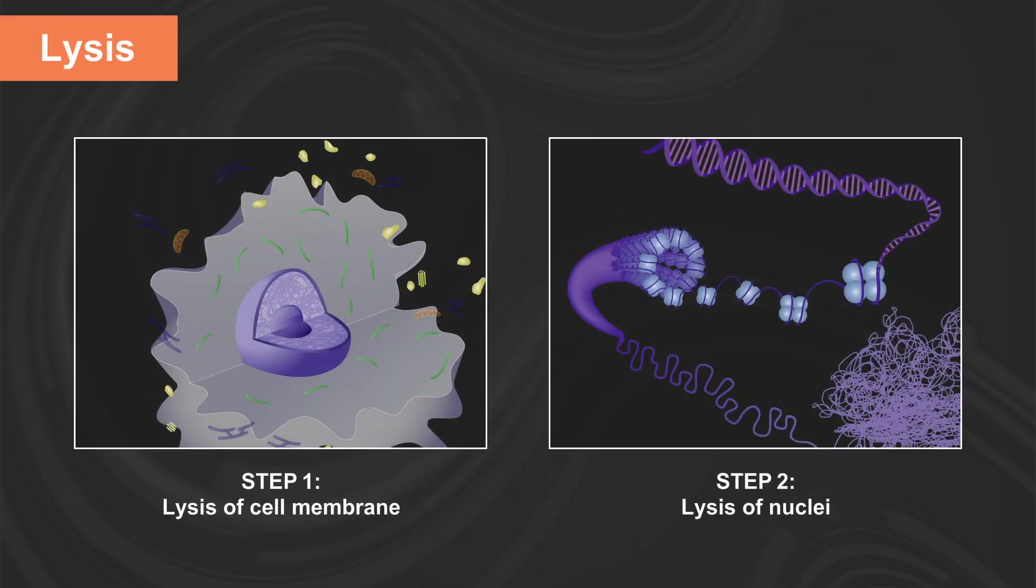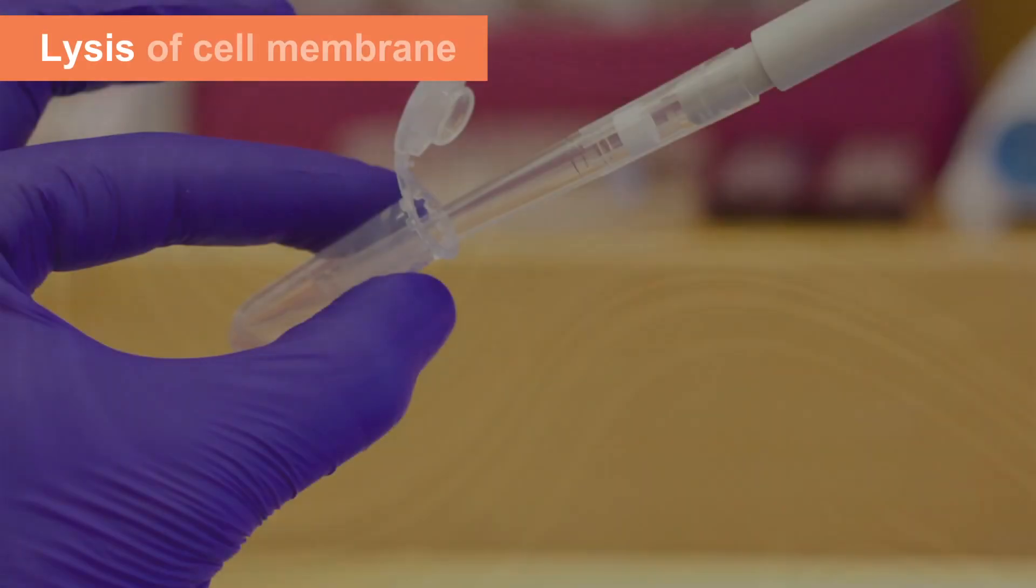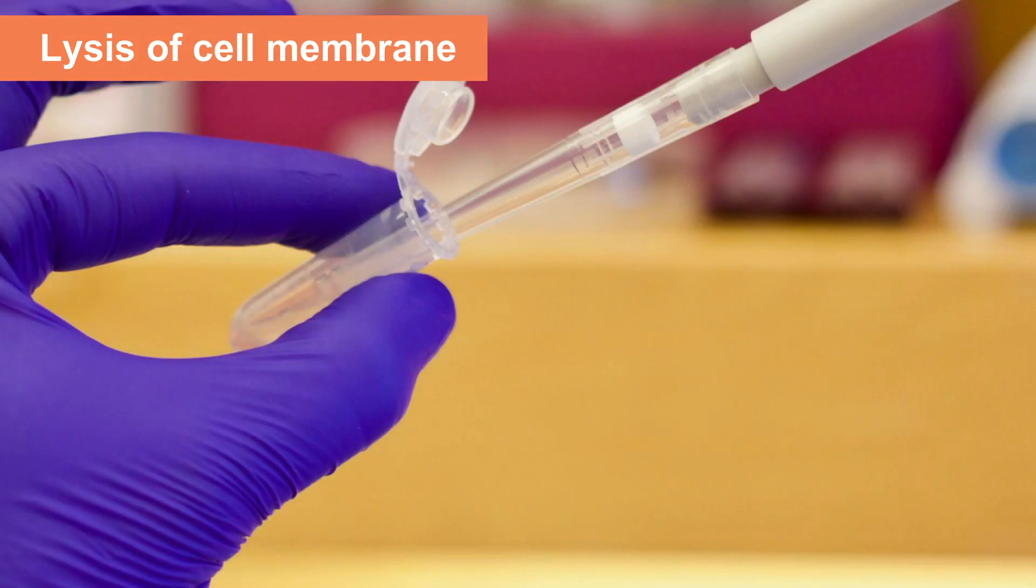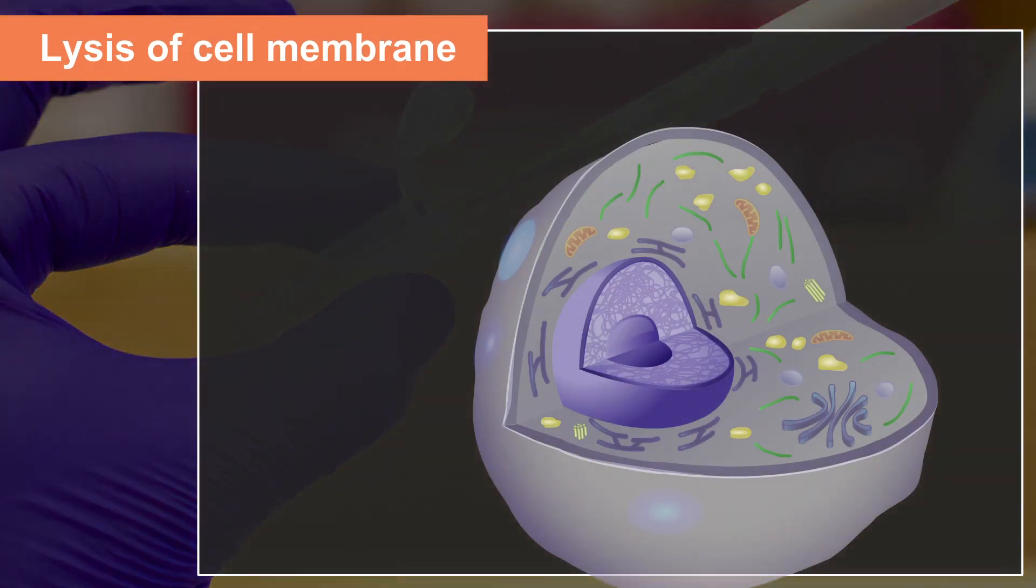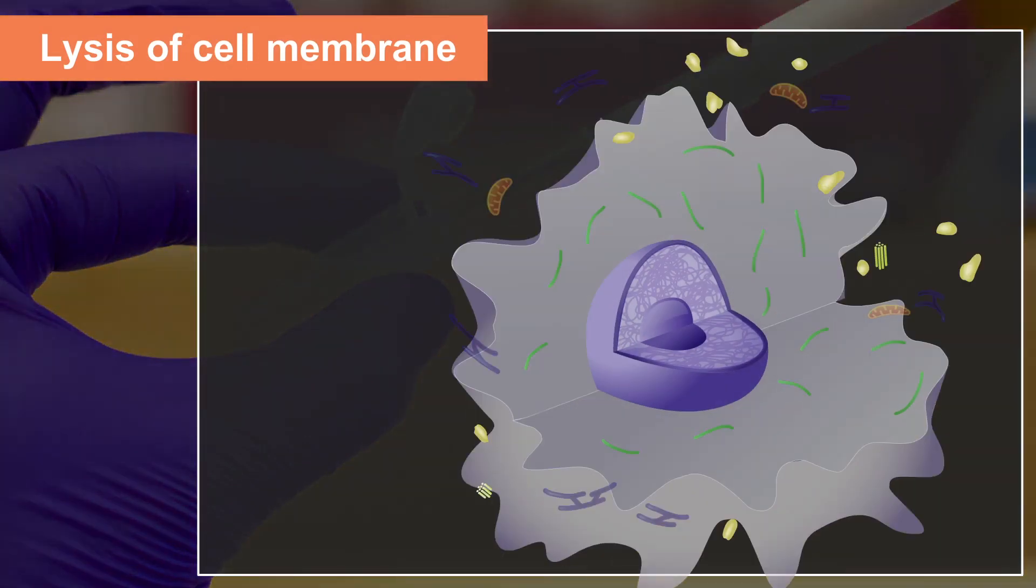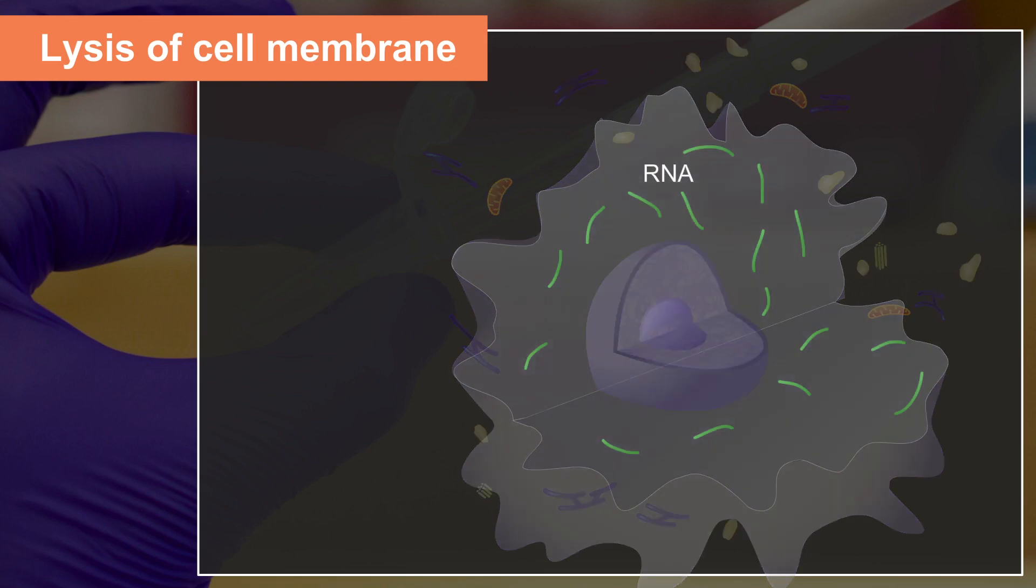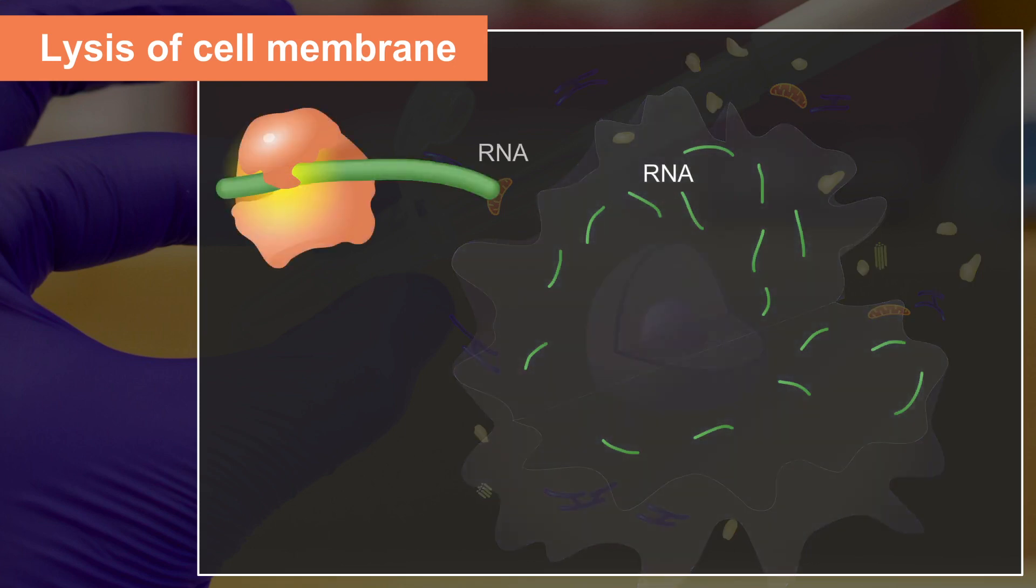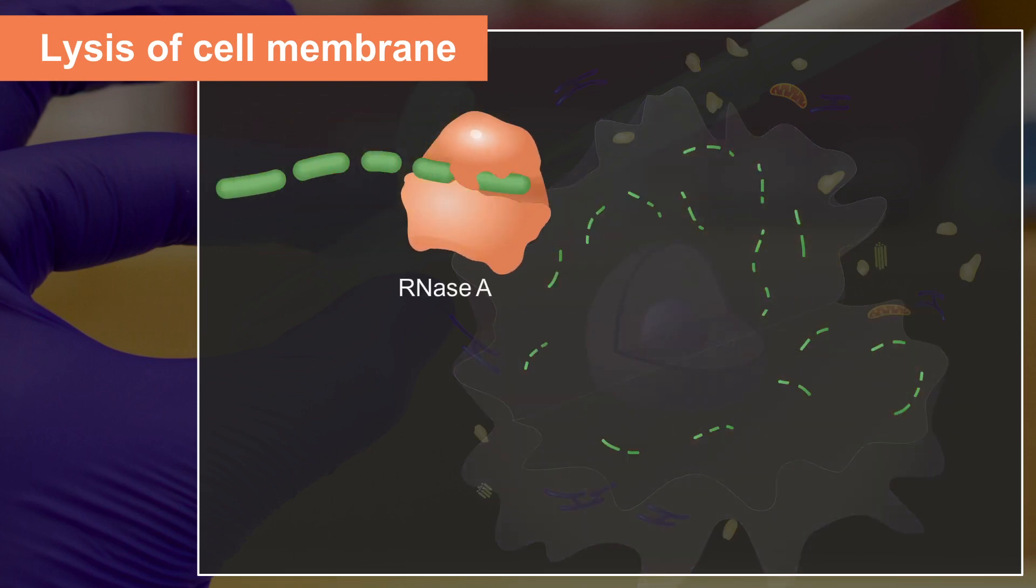The Monarch method employs a two-step lysis. First, the cell membrane is lysed with a mild nuclei prep buffer mixed with RNase A. This releases the contents of the cytoplasm but leaves the nuclei intact. The RNA in the cytoplasm is exposed, allowing it to be efficiently digested by RNase A.